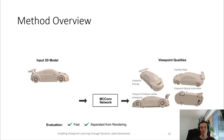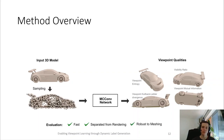To overcome these limitations, we present a learned approach which directly predicts viewpoints from the input 3D model, thus separating the viewpoint selection from the rendering process, which allows for a much faster evaluation. Further, we propose to use point convolutional neural networks, which only receive point cloud information as input, and thus makes our approach robust to the input mesh quality and mesh discretization.